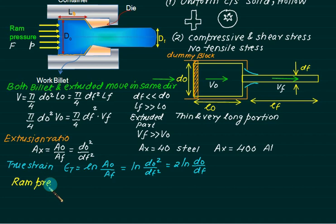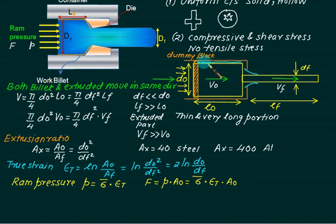Ram pressure is given by P equals average flow stress multiplied by true strain. Stress multiplied by epsilon T equals ram pressure. Ram pressure is uniformly distributed over this area on D0. We require extrusion force is P multiplied by A0, that is sigma bar multiplied by epsilon T multiplied by A0.